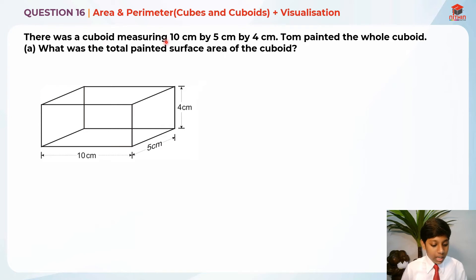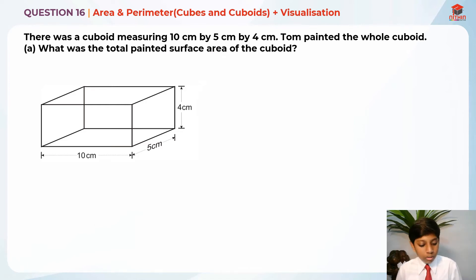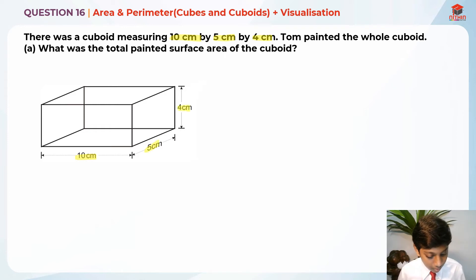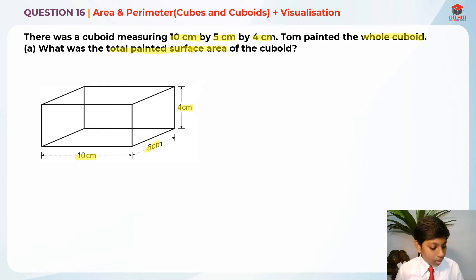There was a cuboid measuring 10 cm by 5 cm by 4 cm. Tom painted the whole cuboid. Part A: what was the total painted surface area of the cuboid? So let's highlight the key information — the cuboid is measuring 10 cm by 5 cm by 4 cm, as shown here.